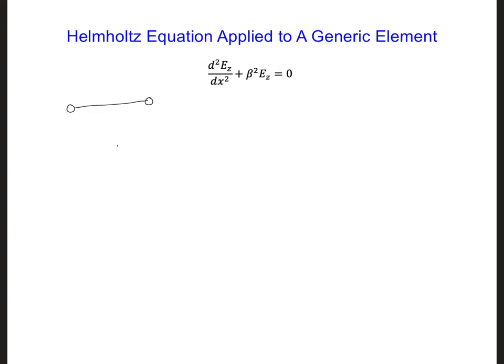Let's consider just one generic element in our grid, which we'll call element e. This element has two nodes, one on each side, which we'll label as node 1 and node 2. Each node is positioned somewhere along the x-axis. We'll call the spatial position of node 1 of element e: x with a subscript denoting the node number and a superscript denoting the element number. I'm writing 'elem' for element because later we'll use a variable called e, so for the second node we'll have x2 corresponding to element e.